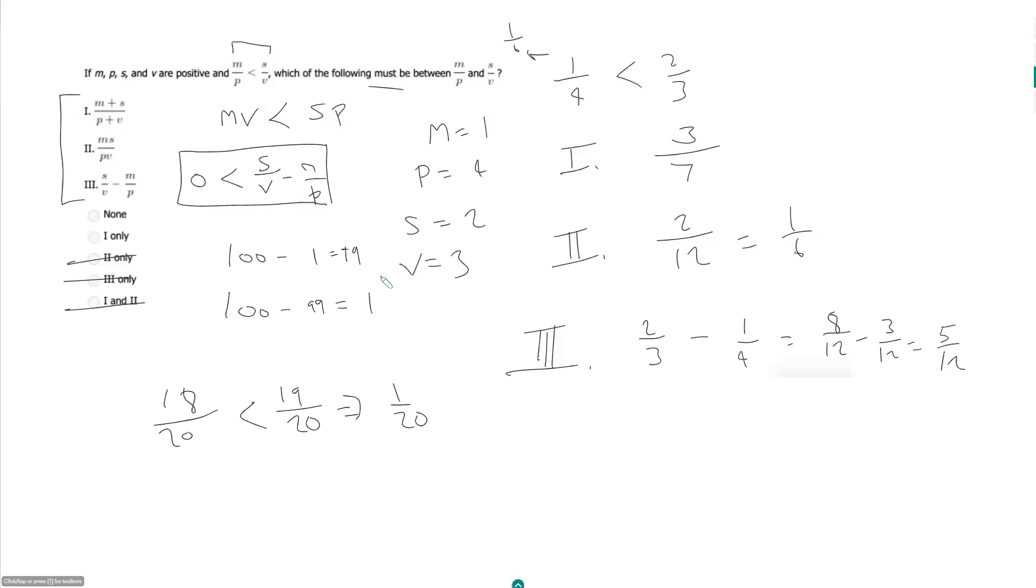And I'm thinking, without proving it necessarily, I think this is always going to be true. I'm hesitant to select none. Maybe we quickly test it with our values here. m plus s. So in this case, that would be 18 plus 19. That would give us 37 over 40. It seems like 37 over 40, that's going to be 18.5 over 20.